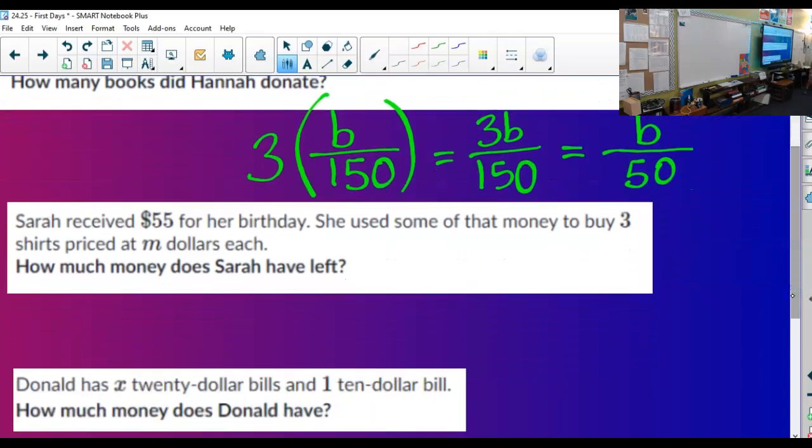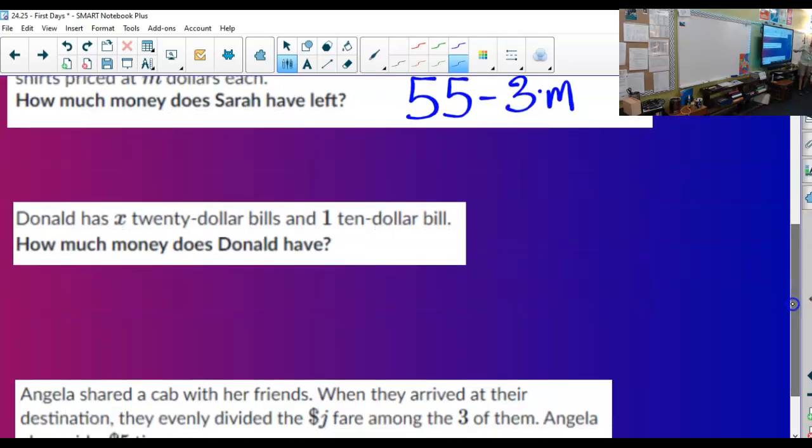Sarah received $55 for her birthday. She used some of that money to buy 3 shirts priced at M dollars each. Chase, help me out. Did you get to this one yet? Vivian, can you help me out? Let's do it live. Anyone want to do it live? All right, Chase. 3M. And we like to put the coefficient first. You can write it M times 3, but it's just nicer if you do 3 times M. Any opposition to what Chase said? He did it live. I agree.